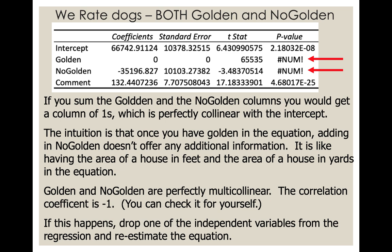What if you put both golden and non-golden into your regression equation? If you sum the golden column plus the non-golden column, you get a column of ones, which is perfectly collinear with the intercept — which is already a column of ones. Once you have golden in the equation, adding no-golden doesn't offer any additional information. Golden and non-golden are perfectly multicollinear, with a correlation coefficient of negative one — perfect negative correlation. This is what we call the dummy variable trap.